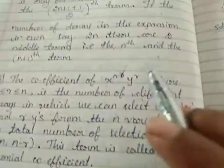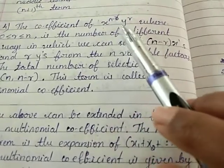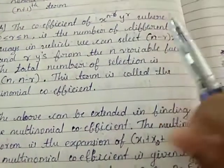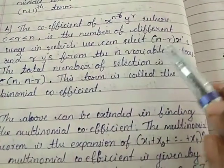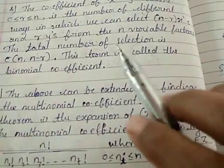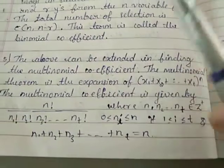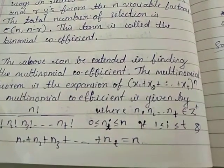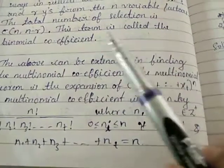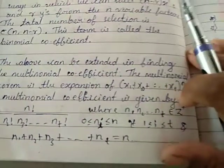We also need to find the coefficient of terms x^(n-r) and y^r. Here x is selected in n-r ways and y is selected in r ways, so the total number of selections is C(n, n-r), which is called the binomial coefficient. This can be extended for finding the multinomial coefficient, which we will see with an example.